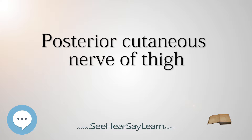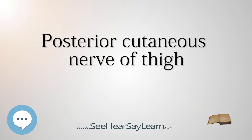It then descends beneath the gluteus maximus with the inferior gluteal artery, and runs down the back of the thigh beneath the fascia lata, and over the long head of the biceps femoris to the back of the knee. Here it pierces the deep fascia and accompanies the small saphenous vein to about the middle of the back of the leg, its terminal twigs communicating with the sural nerve.